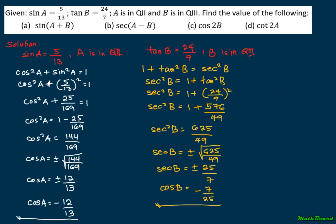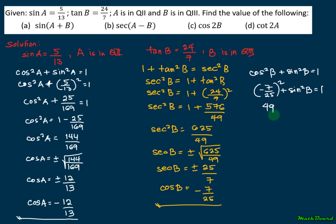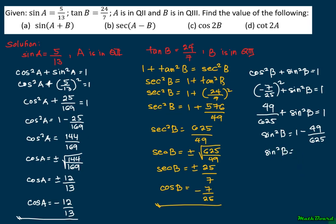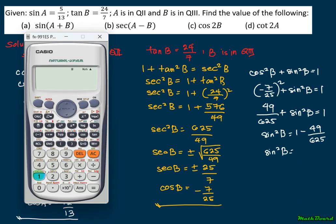To solve for the value of sine B, we use the Pythagorean identity: cosine squared B plus sine squared B equals 1. Cosine B is negative 7 over 25, so (−7/25) squared plus sine squared B equals 1. That is 49 over 625 plus sine squared B equals 1. So sine squared B equals 1 minus 49 over 625, which is 576 over 625.